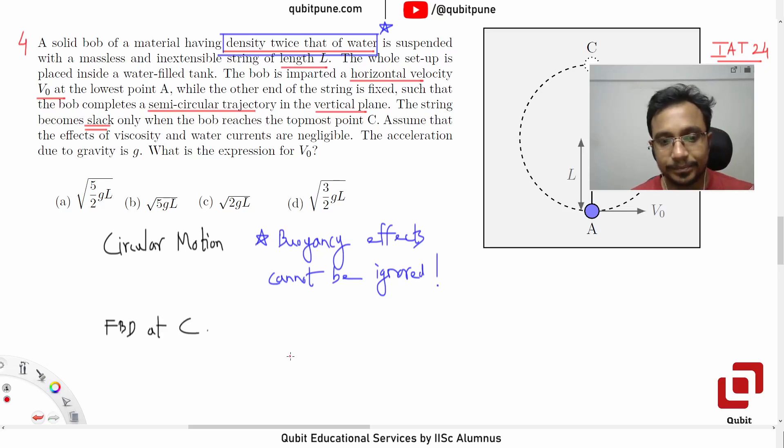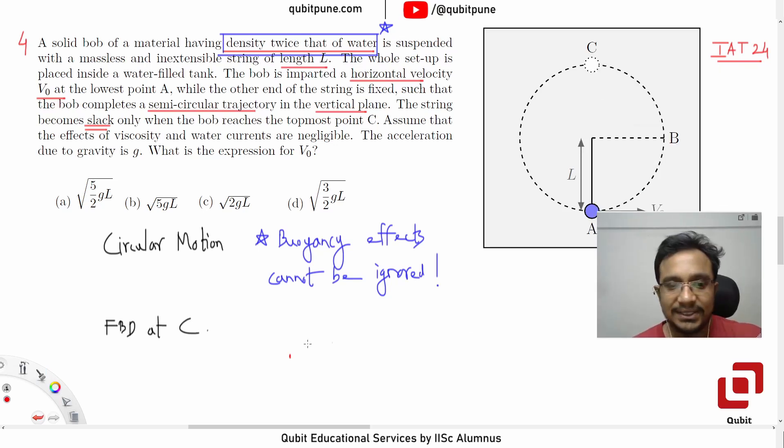At C, how many forces are acting? Given that the string becomes slack, tension at C would be zero. Tension at C would be zero, which means only two forces are going to act.